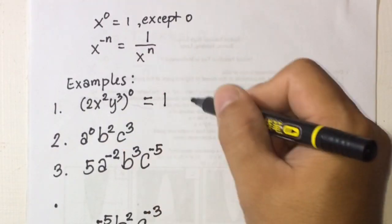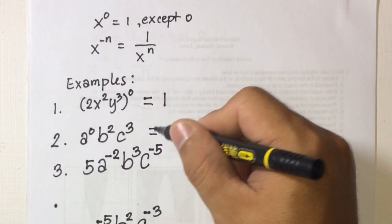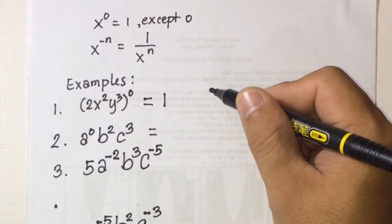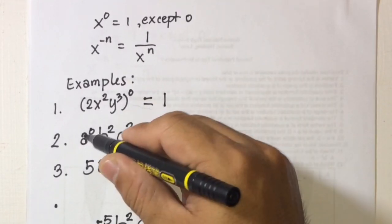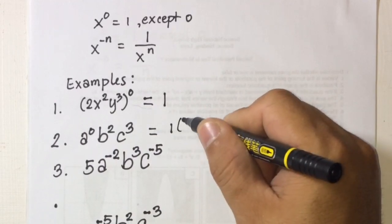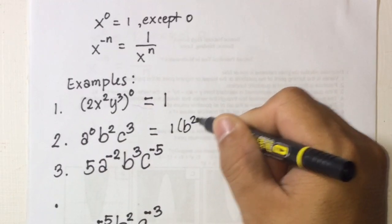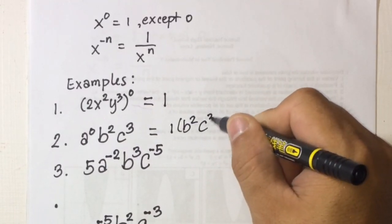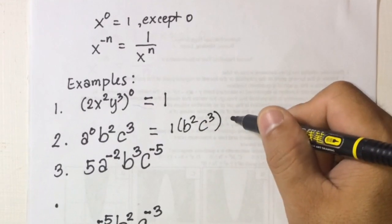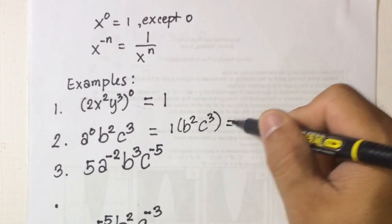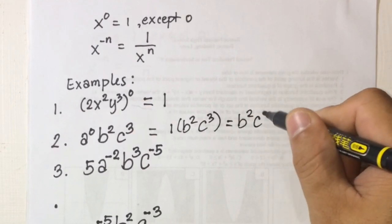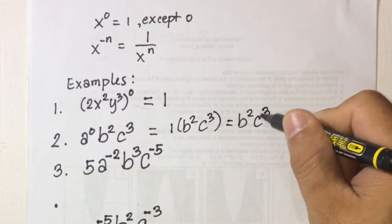Number 2: a to the power of 0, b squared, c cubed. So a to the power of 0 is 1, so 1 times b squared times c cubed. That will be equivalent to b squared times c cubed.